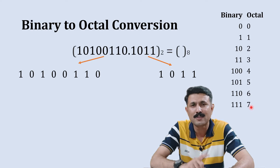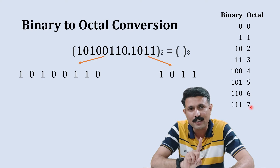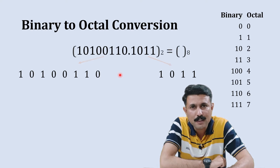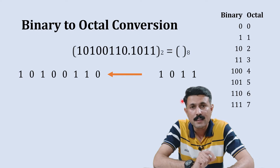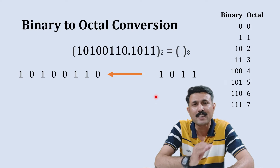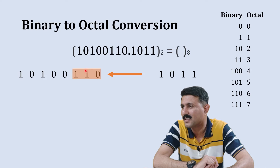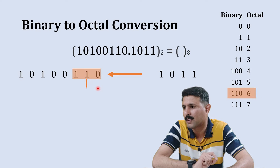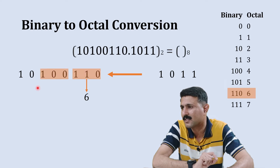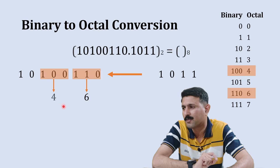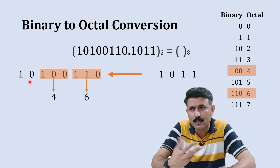This table represents the binary equivalent to octal. Observing this table, it's clear that to represent any single-digit octal number you require a three-bit binary number. So what we'll do is start creating groups of three digits to convert into octal equivalent. The first group of three digits is 110, and the octal equivalent to 110 is 6, so we write 6 here. Then the next group is 110, which is equivalent to 4, so we write 4 here.